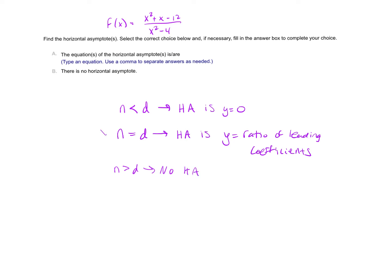We are in this situation: both the degree of the numerator and the denominator is 2. The highest power on x is 2 in both. So my horizontal asymptote is y equals the ratio of leading coefficients, which would be 1 over 1, or just y equals 1.